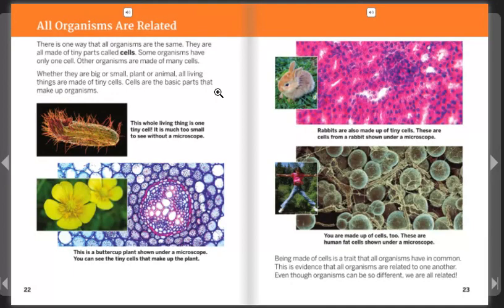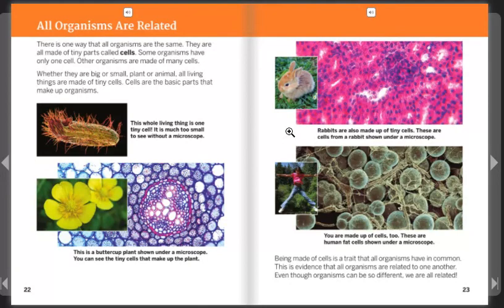Cells are the basic parts that make up organisms. This whole living thing is one tiny cell — much too small to see without a microscope. This is a buttercup plant shown under a microscope; you can see the tiny cells that make up the plant. Rabbits are also made up of tiny cells, shown here under a microscope. You are made of cells too — these are human fat cells shown under a microscope. Being made of cells is a trait that all organisms have in common, and this is evidence that all organisms are related to one another. Even though organisms can be so different, we are all related.